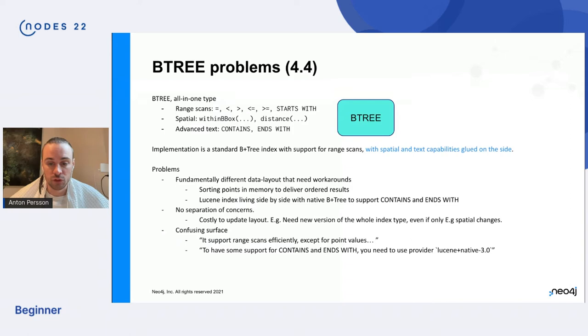And also the surface is kind of confusing. Like we have support for range scans efficiently, except for points, which are sorted in a different way. We have kind of support for contains and ends with, but only if you use a special index provider. So the Btree type comes with all kinds of problems like that. And basically it's not a very good surface. And since we're transitioning into a new major version now, this is the perfect time to clean that surface up and to change it into something that serves us better in the future.